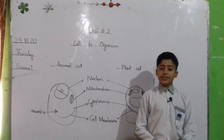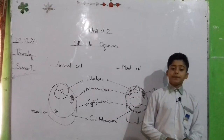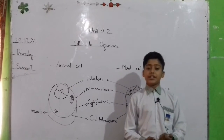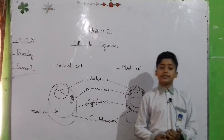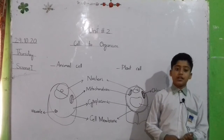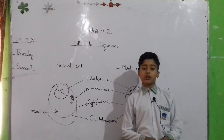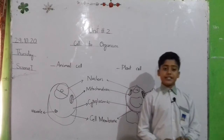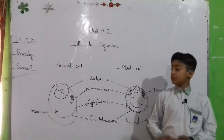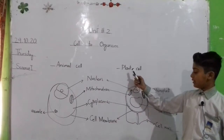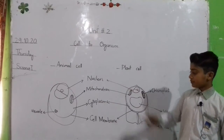Mitochondria. It provides the energy to the cell for its activities. So it is called the powerhouse of the cell. It is present in both animal cell and plant cell.